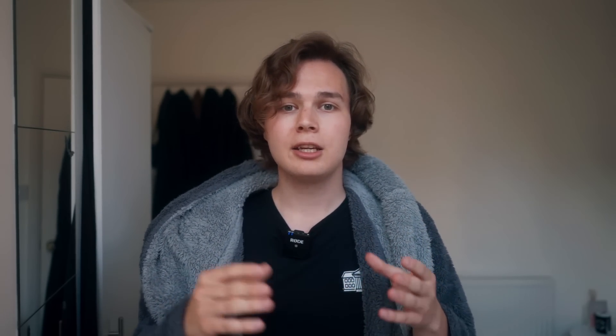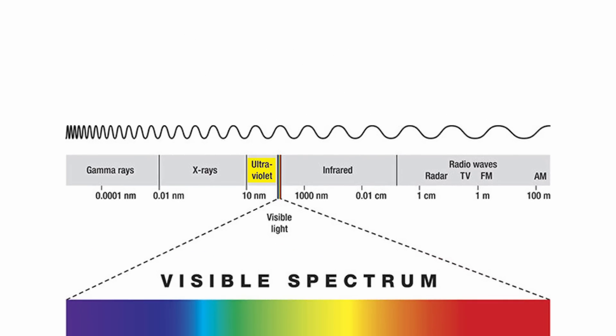Now, one way to overcome the diffraction limit is to, well, not actually overcome it at all. Instead, you just opt for smaller and smaller wavelengths of light, going along the spectrum from visible light to UV to X-rays, so that you can resolve smaller and smaller distances.